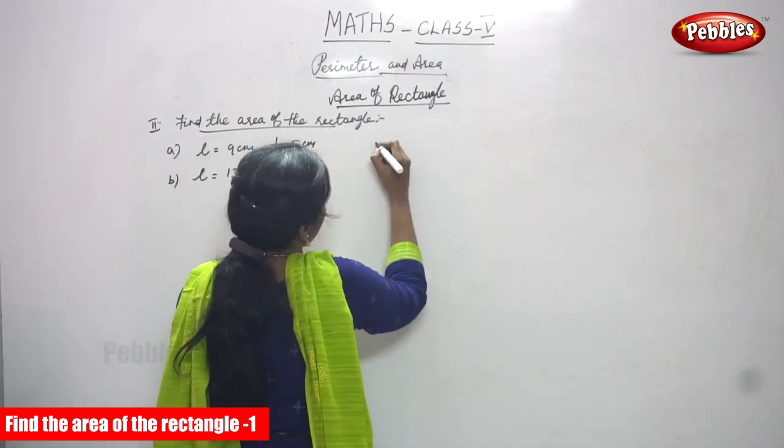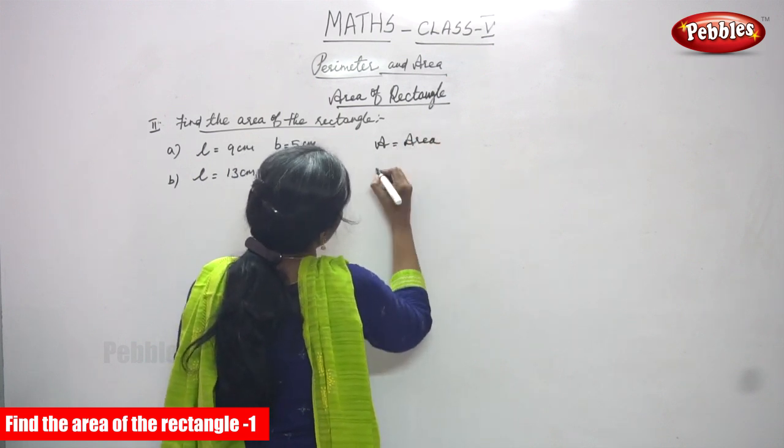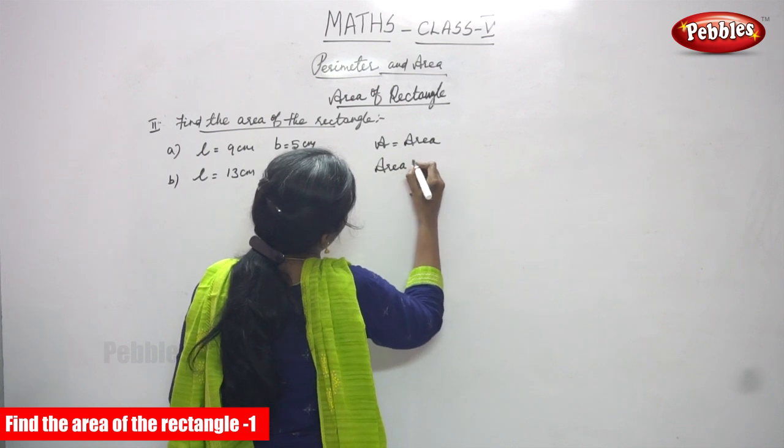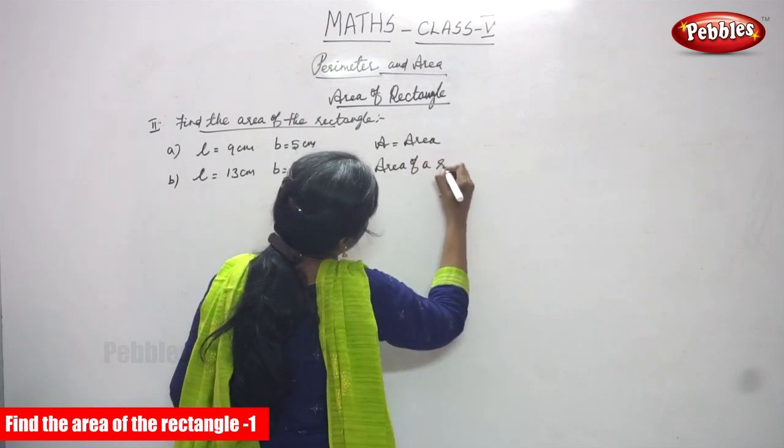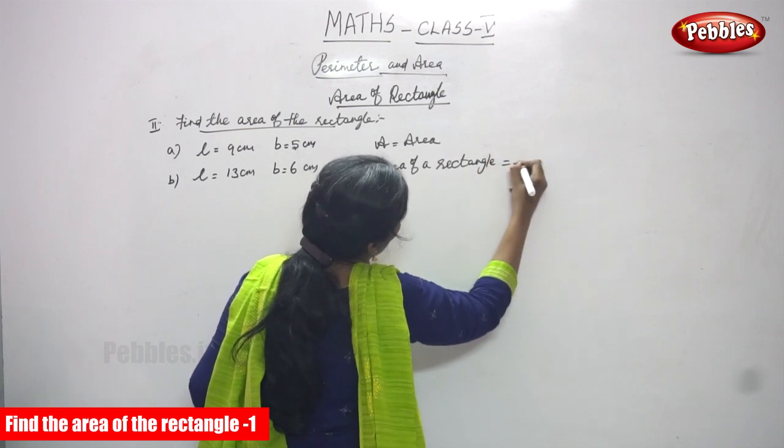So, it's very simple numbers given. A means I've told you already area. Area of the rectangle formula, area of a rectangle formula, it is L into B.